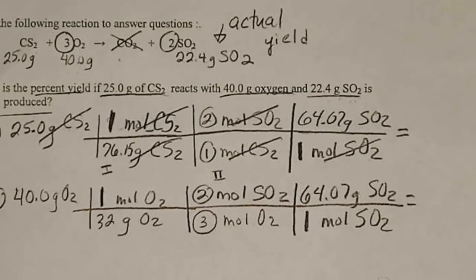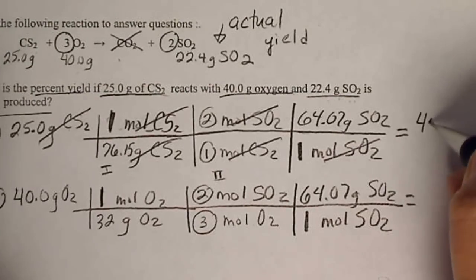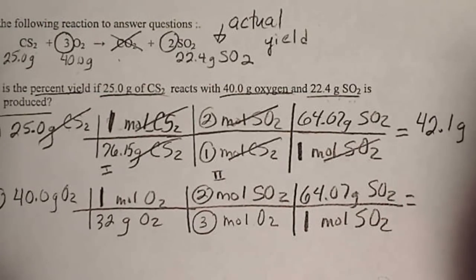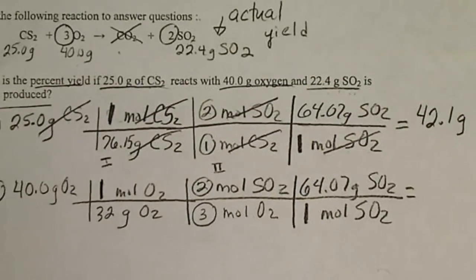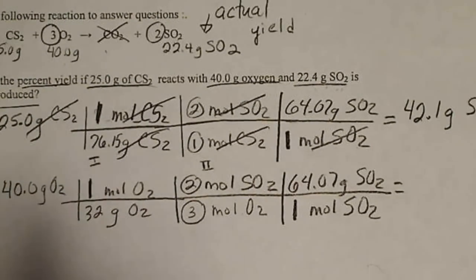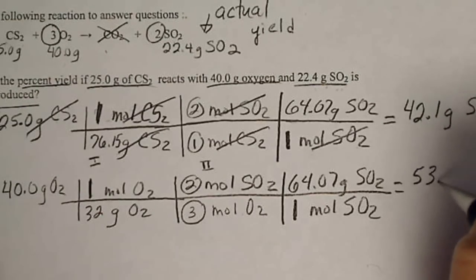We should have done that first, I guess. 25 divided by 76.15 times 2 times 64.07. So we've got enough CS2 to make 42.1 grams of SO2. We don't know if that's going to be the least amount until we do this calculation. We divide it by 32, and if we do this, we get 53.4 grams of SO2.